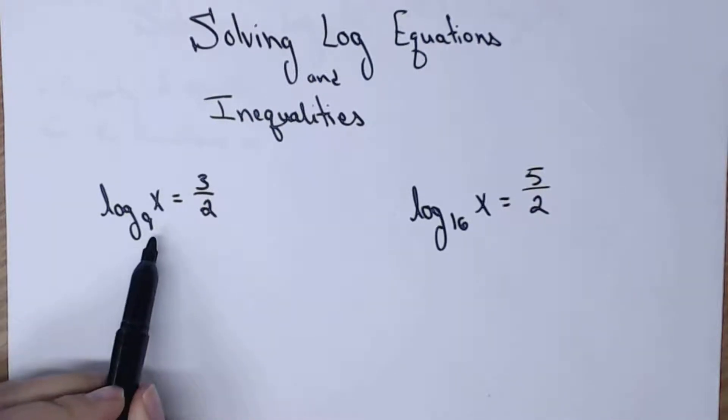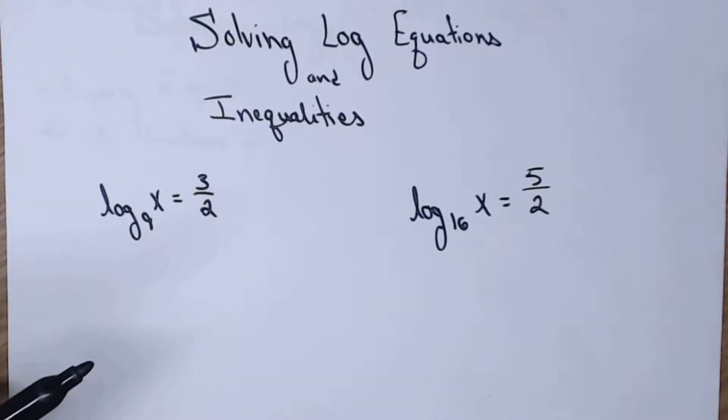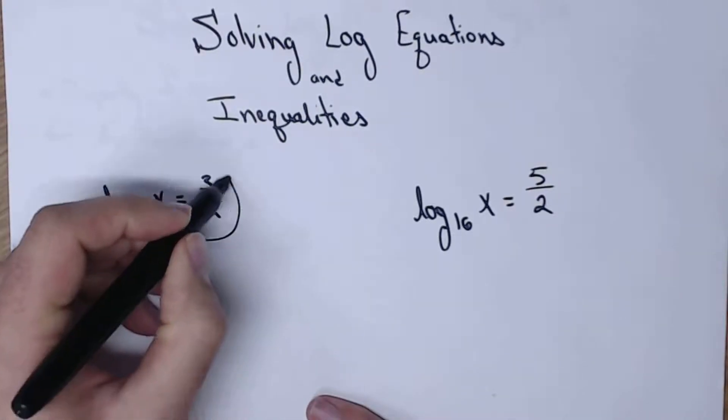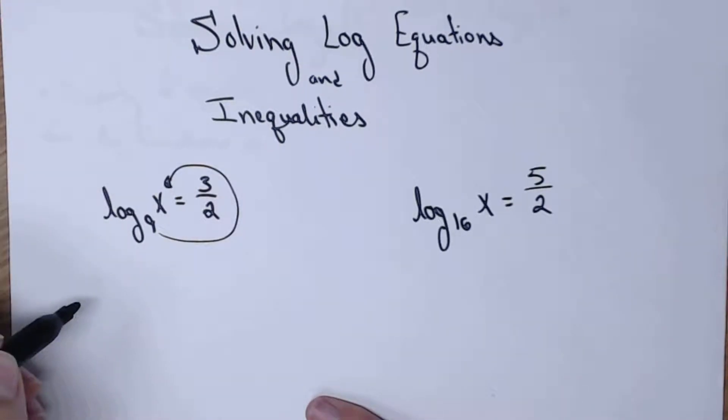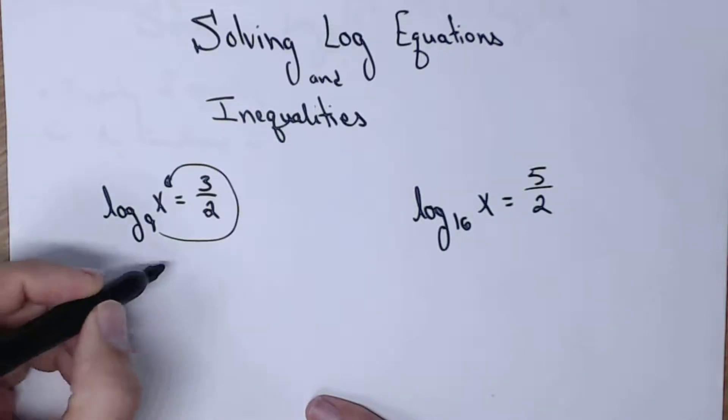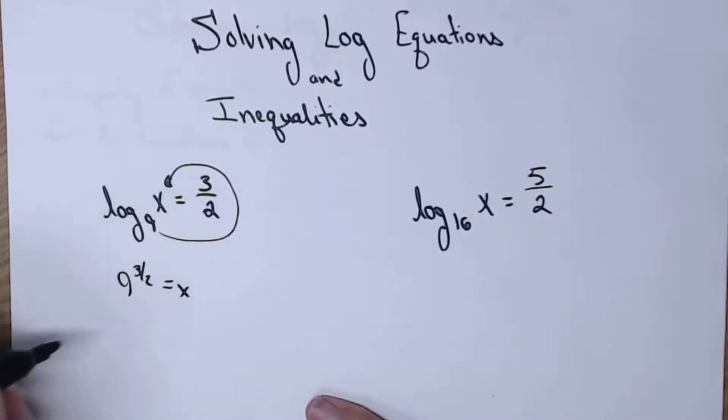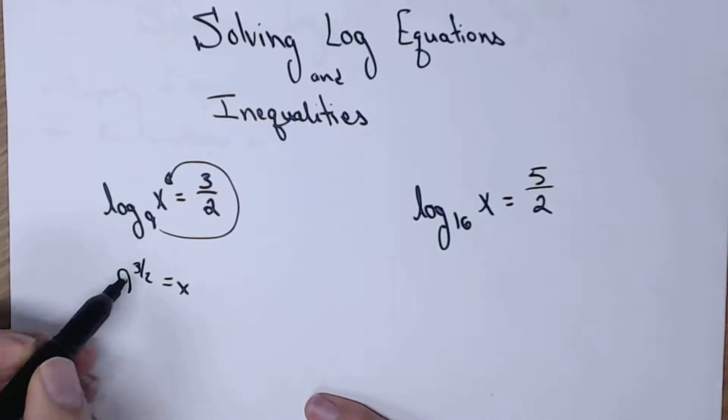We have log base 9 of x equals 3 halves. First thing I'm going to do here is get it into a different form. When x is inside that log, it's kind of tricky to work with. So instead of log form, I'm going to go to exponential form. So 9 to the 3 halves equals x. I'm now going to simplify this.